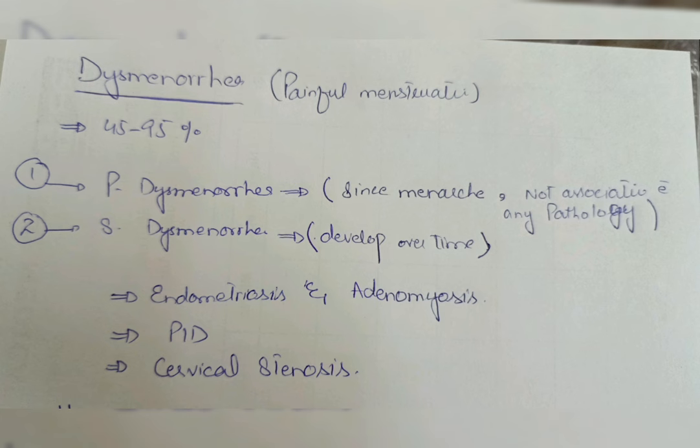Dysmenorrhea is divided into two types. The first one is Primary Dysmenorrhea and the second one is Secondary Dysmenorrhea. Primary Dysmenorrhea is actually painful periods since the onset of menarche; it is almost rarely associated with any pathology. Secondary Dysmenorrhea is painful periods that have developed over time and is associated with pathology that includes Endometriosis, Adenomyosis, Pelvic Inflammatory Disease, and Cervical Stenosis.